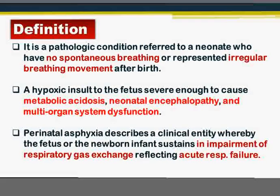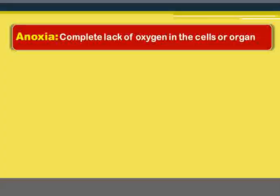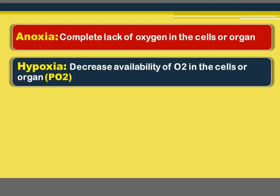Before going into the details of this subject, we need to know these important definitions, which we will repeat more than once. First, anoxia: when we say anoxia, we mean a complete lack of oxygen in the cells or organ. While hypoxia means decreased availability of O2 in the cells or organ — we refer to this as the PO2, the partial pressure of O2.